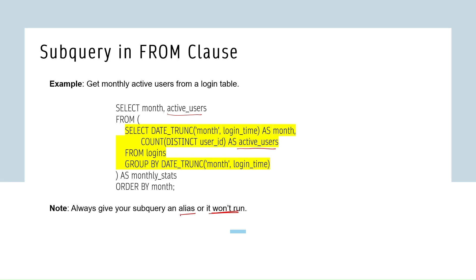Quick recap: use a subquery in the WHERE clause when filtering rows using values from another table; use a subquery in the SELECT clause to add calculated data per row like counts or averages; use a subquery in the FROM clause when you need a temporary table for further querying or filtering. That's all for this video — see you in the next one, bye!